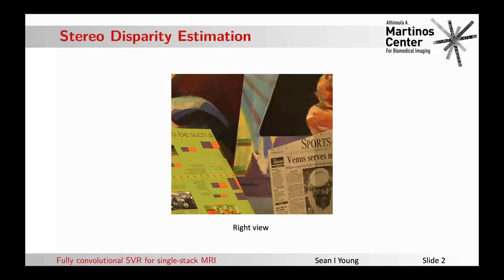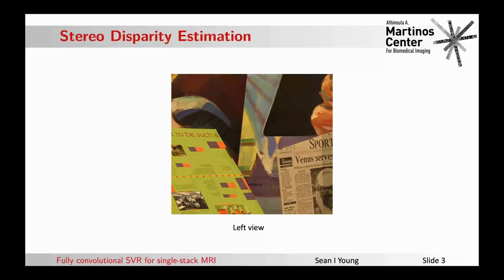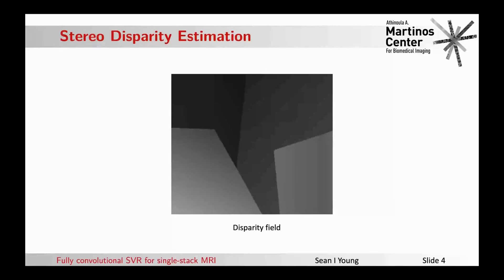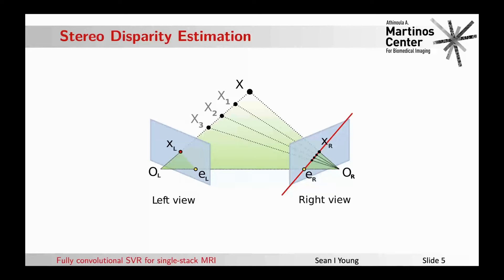As a computer vision person, what better example than stereo disparity estimation. In computer vision there's disparity estimation, where you're tasked with estimating the depth map given two views of the same scene. If you go back and forth between the right and left views, you can estimate from those two views a disparity field — a one-over-depth field. That's possible because of epipolar geometry: a ray of light in one view is mapped to a line in the other view. So you find the correspondence between points to estimate disparity.